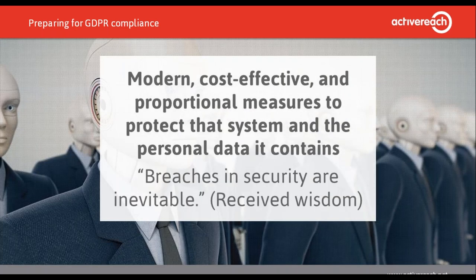GDPR also demands appropriate technical and organizational measures to mitigate risk to the data subject, and it mentions four things specifically: encryption and pseudonymization; ensuring confidentiality, integrity and availability - the CIA triad of security; the ability to restore availability and access to data in a timely manner; and processes for regularly testing the effectiveness of these measures.